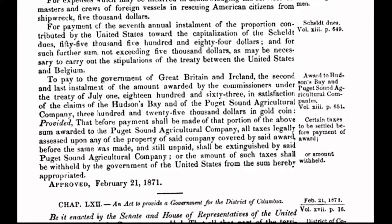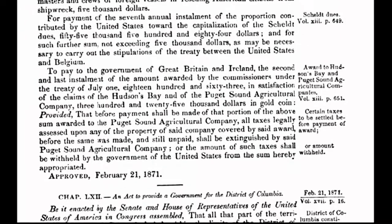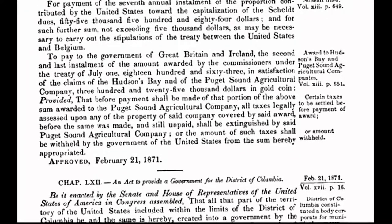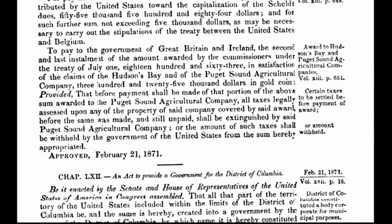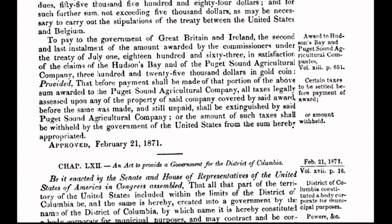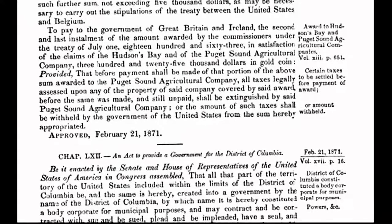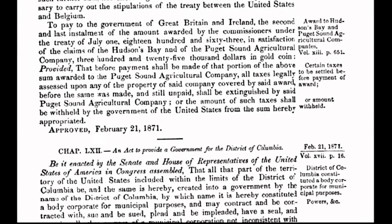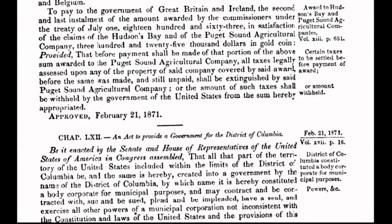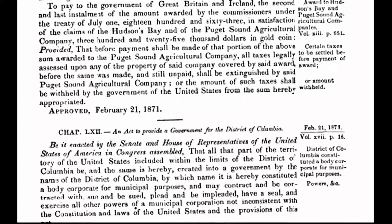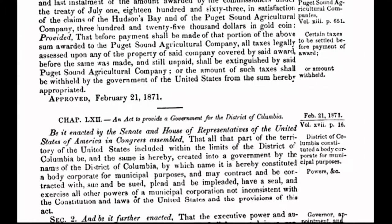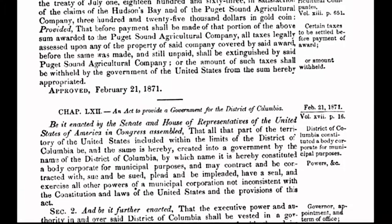With no constitutional authority to do so, Congress creates a separate form of government for the District of Columbia, a 10-mile-square parcel of land. The act was passed when the country was weakened and financially depleted in the aftermath of the Civil War. It was at that time a strategic move by foreign-interest international bankers, who were intent upon gaining a stranglehold on the coffers and neck of America. Congress cut a deal with the international bankers, specifically the Rothschilds of London, to incur a debt to said bankers.